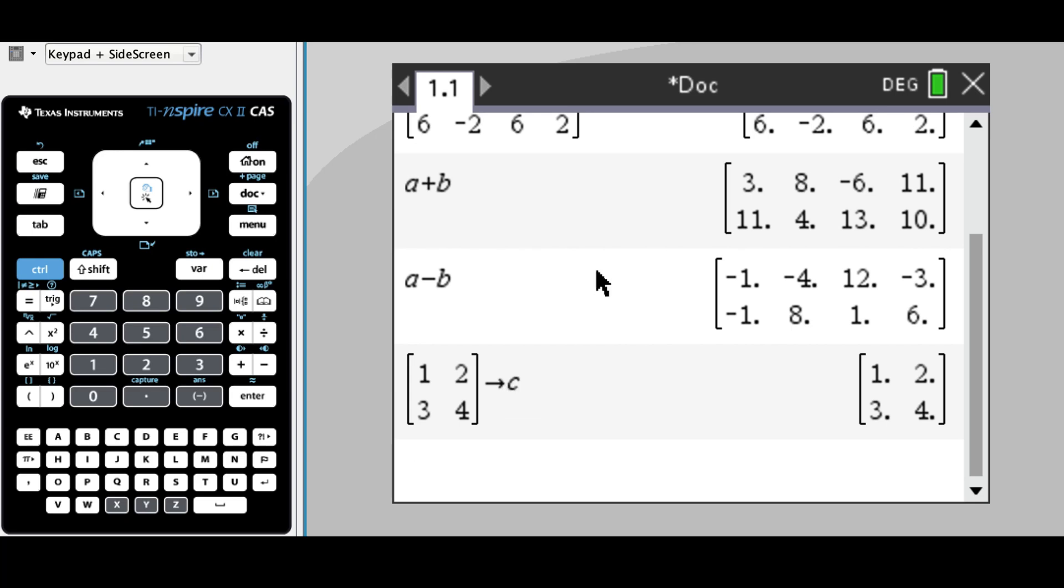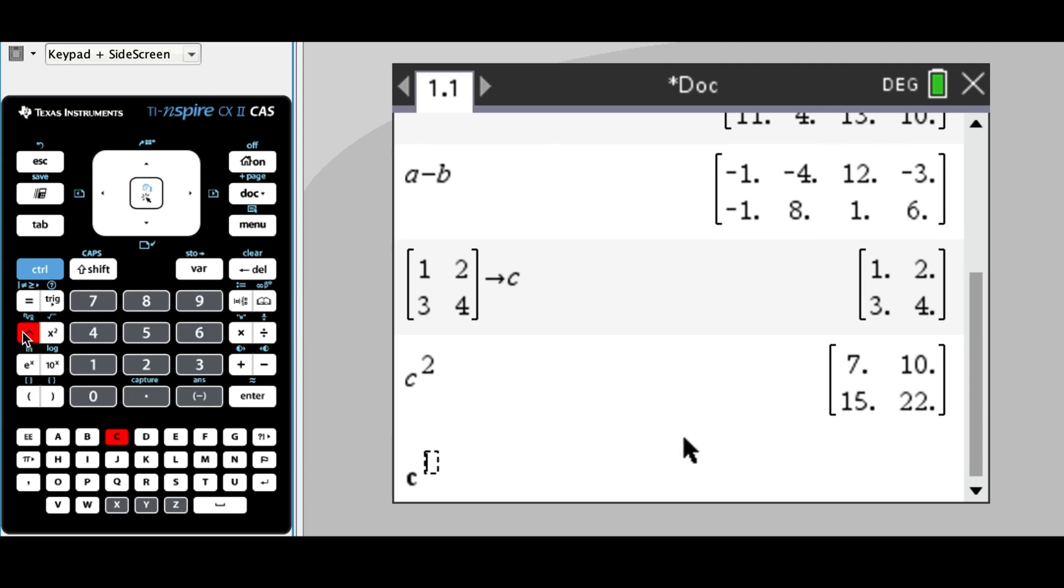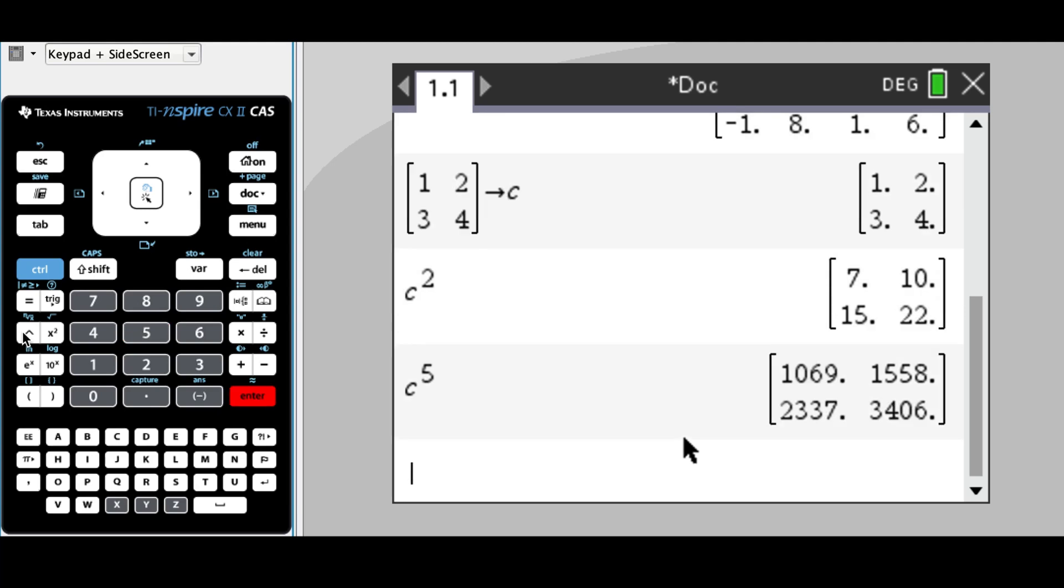To find the power of matrix c that I've entered here, I would simply type in c to the power of 2 and it would find that particular power. We could do the same with a different power and it'll find c to the power of 5 and so on.